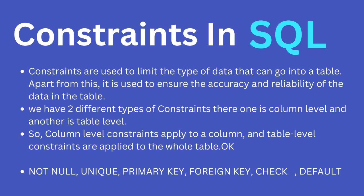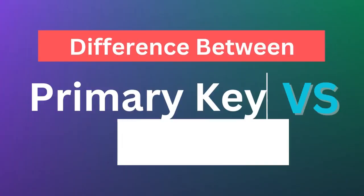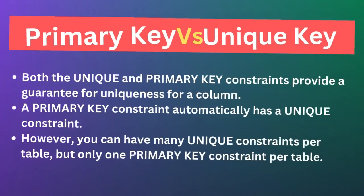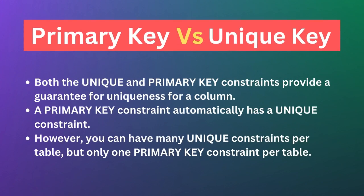The fifth question is: what is a primary key and how is it different from a unique key? This is one of the most commonly asked interview questions. Both the UNIQUE KEY and PRIMARY KEY constraints provide a guarantee for uniqueness for a column or set of columns. A PRIMARY KEY constraint automatically has a unique constraint. However, you can have many UNIQUE constraints per table, but only one PRIMARY KEY constraint per table.